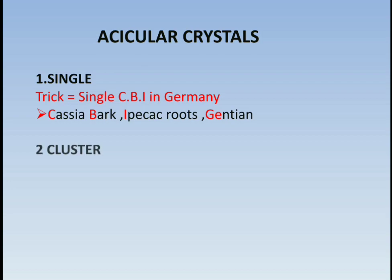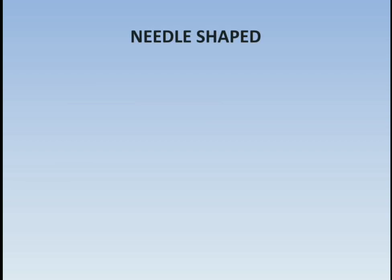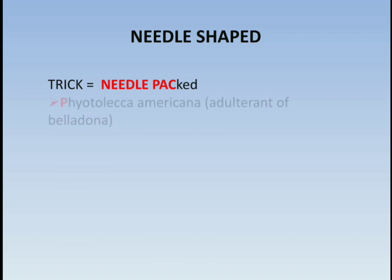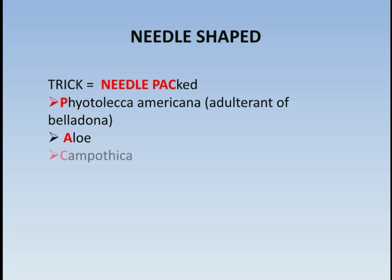Next in acicular crystals is clusters — the drugs are squill and hyoscyamus. For needle-shaped acicular crystals, the trick is 'needle packed': P denotes Phytolacca americana — that is an adulteration of belladonna — A denotes aloe, and C denotes Camptotheca.